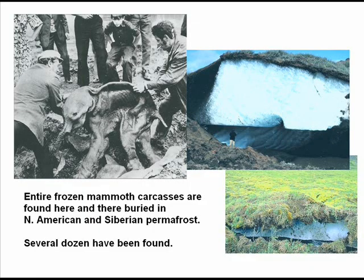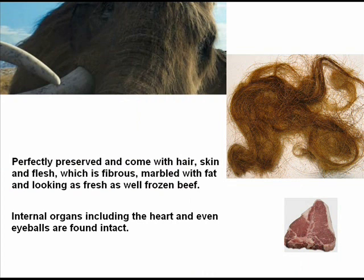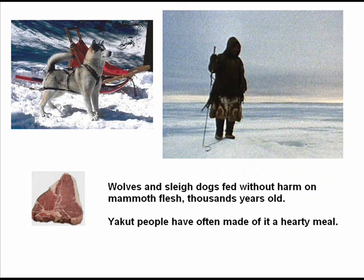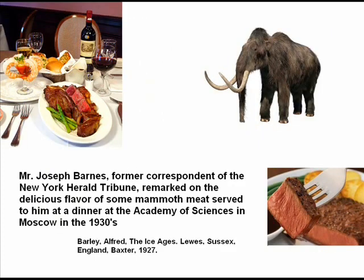How do we know? Entire frozen mammoth carcasses are found buried in North American and Siberian permafrost. Several dozen carcasses have been found, perfectly preserved and complete with hair, skin, and flesh — which is fibrous, marbled with fat, and looking as fresh as well-frozen beef. Internal organs including the heart and even eyeballs are found intact. Wolves and sleigh dogs fed without harm on mammoth flesh thousands of years old. Yakut people have often made a hearty meal of it. Joseph Barnes, former correspondent of the New York Herald Tribune, remarked on the delicious flavor of some mammoth meat served to him at a dinner at the Academy of Sciences in Moscow in the 1930s.